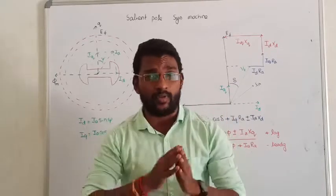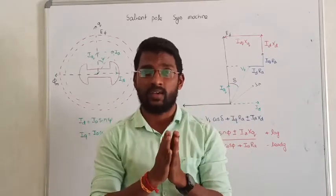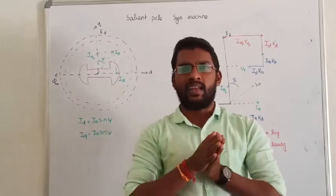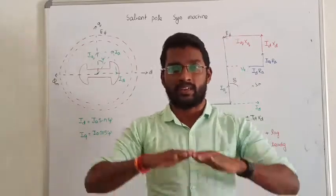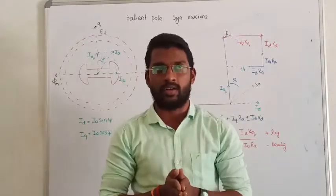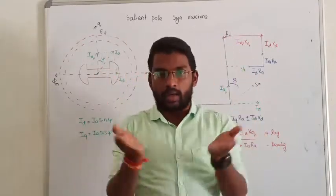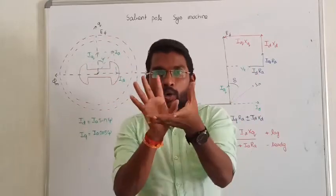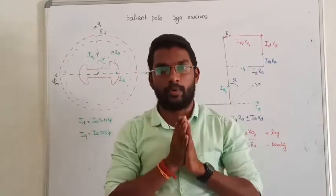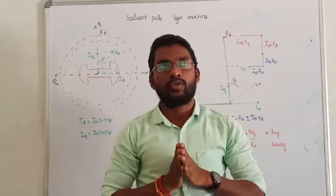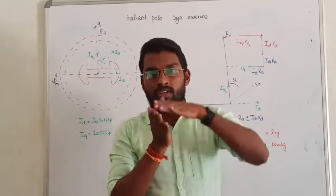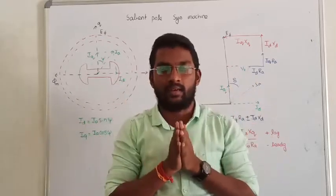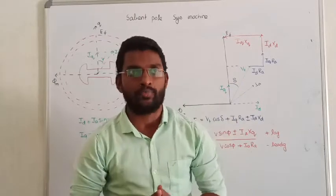Now, what is the difference between saliency and non-saliency? Non-saliency is cylindrical. In case of a cylindrical machine, the rotor has the structure of a cylinder. The poles are projected inward — that is called non-saliency.